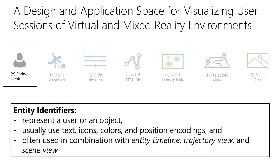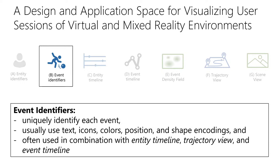Entity identifiers are visual design elements that represent a user or an object in the environment. Usually, interactive objects in the environments are considered as entities. To uniquely identify an entity, the identifiers use text, icons, colors, and position. Entity identifiers are often used in combination with entity timeline, trajectory view, and event timeline. The next category is event identifiers, used to uniquely identify each event that occurred in the session. Similar to entity identifiers, they also use text, icon, colors, and position encodings. In addition, they also use shape to identify an event. They are often used in combination with entity timeline, trajectory view, and event timeline.